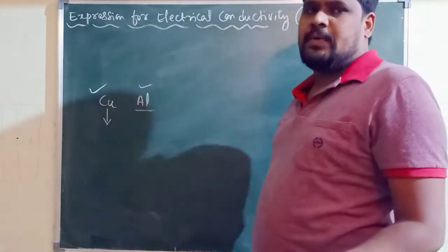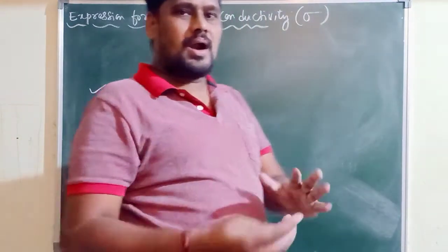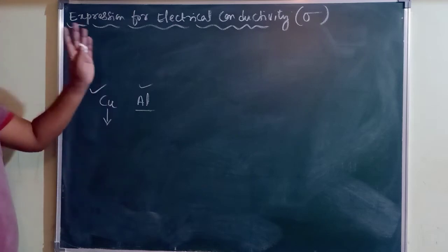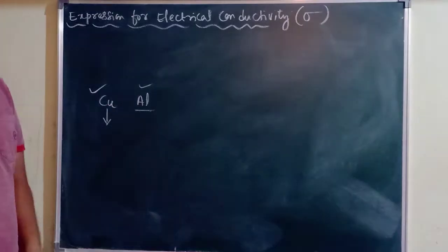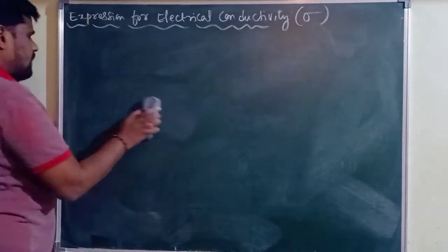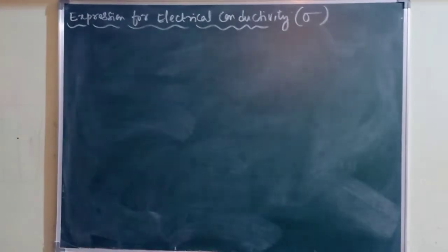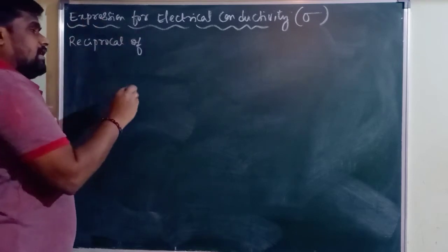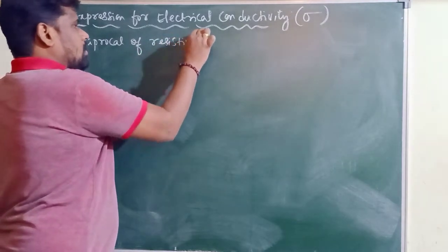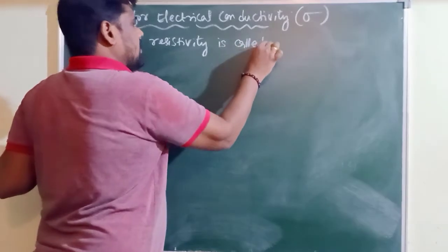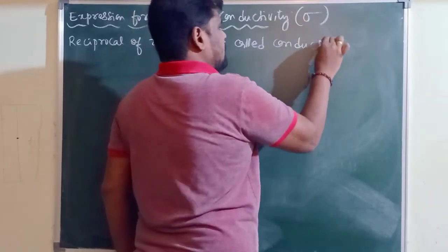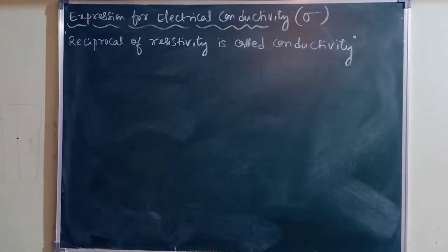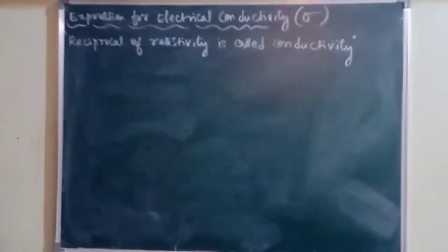Higher the conductivity, greater will be the conducting property of a material. The material is said to be a good conductor of electricity provided it has a high value of electrical conductivity. Then how are we going to define electrical conductivity of a given material? As I said in the last class, reciprocal of resistivity is called conductivity. The electrical conductivity of a material is simply the reciprocal of resistivity.